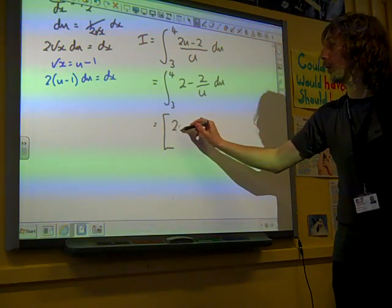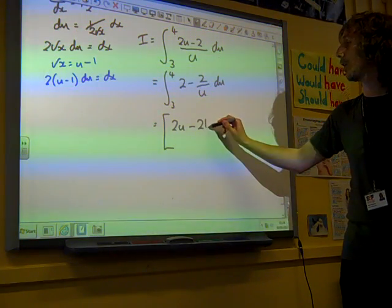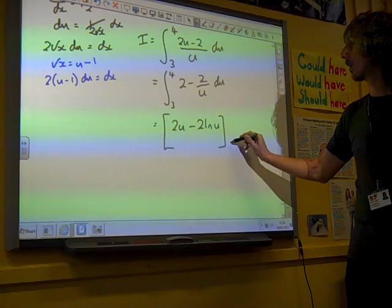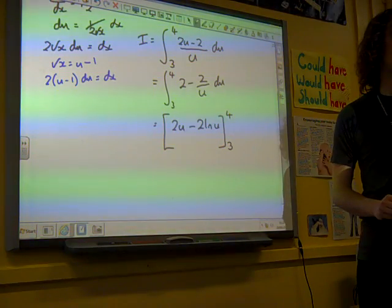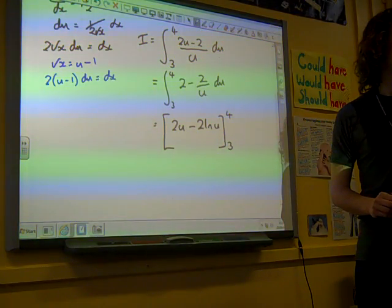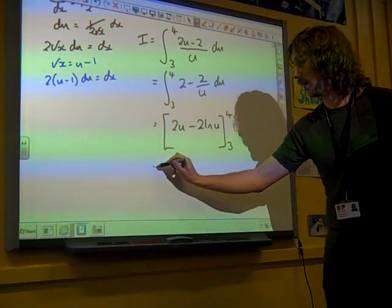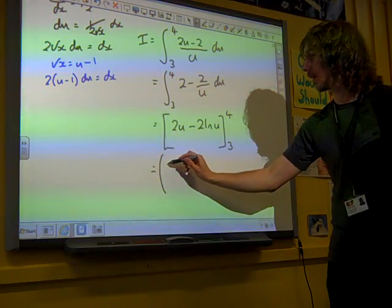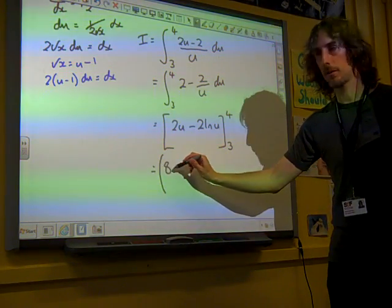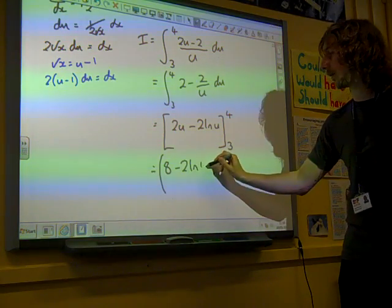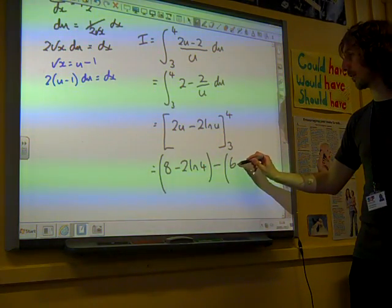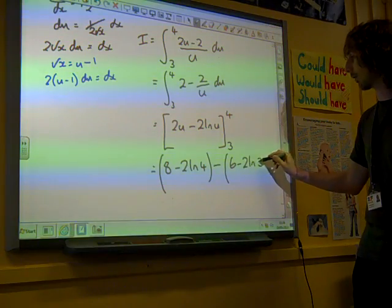We've got 2u minus 2 ln u between 3 and 4. If we put the values in, we're going to have 2 times 4, which would be 8, minus 2 ln 4. Take away 6 minus 2 ln 3.